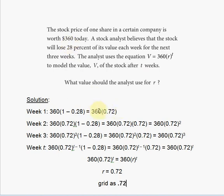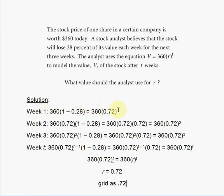This gives us 0.72, which means 72% of the $360 remains as the stock price after one week. So we multiply 360 by 0.72. For week two, we take the current value — 360 times 0.72 — and lose 28% of that new value by the end of the second week. We do the same thing, giving us 360 times 0.72 times 0.72, which we can express as 360 times 0.72 raised to the second power. Notice the week number matches the exponent on 0.72.